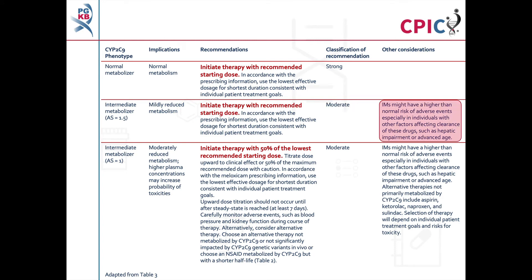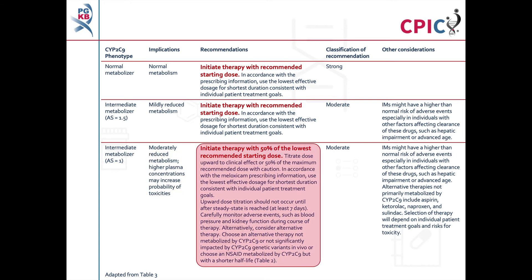CYP2C9 intermediate metabolisers may have a higher than normal risk of adverse events, which can particularly impact patients with other factors that affect drug clearance. Patients with a CYP2C9 intermediate metaboliser phenotype and an activity score of 1 will have moderately reduced metabolism of meloxicam, which may increase the probability of drug toxicity. These patients can either begin therapy at 50% of the lowest recommended starting dose before titrating upwards, or be given an alternative therapy not primarily metabolised by CYP2C9. This is a moderate recommendation.